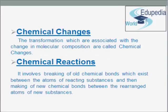We know that matter undergoes transformations. These transformations which are associated with change in molecular composition are called chemical changes. These chemical changes result in the formation of a new substance, so these chemical changes are called chemical reactions. Chemical reactions are the processes in which new substances with new properties are formed.